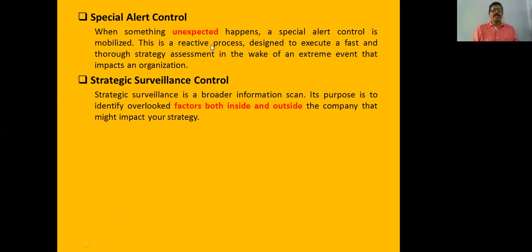The next type is called special alert control. Special alert control usually takes place in emergency situations — when conditions go bad, sometimes the company may be in losses. An emergency strategy is launched and the execution of such strategies is a complicated task. All decisions taken during that strategy execution come under special alert control. To manage emergency situations, a certain amount of assessment and resources need to be allocated.